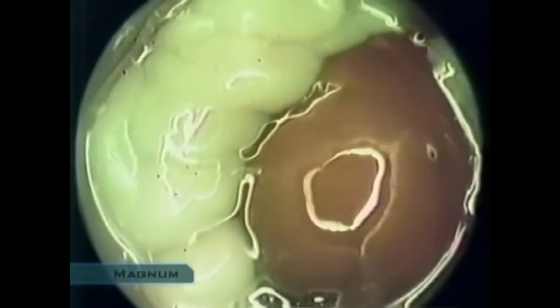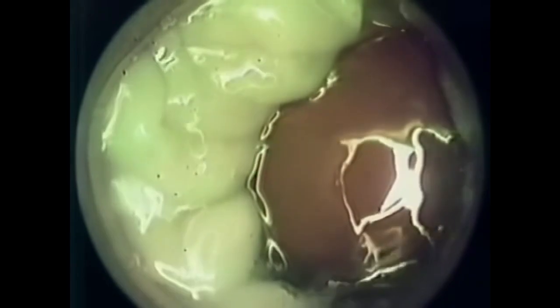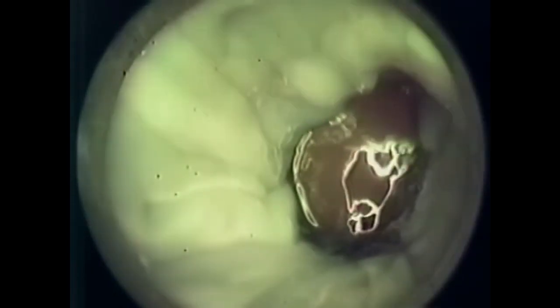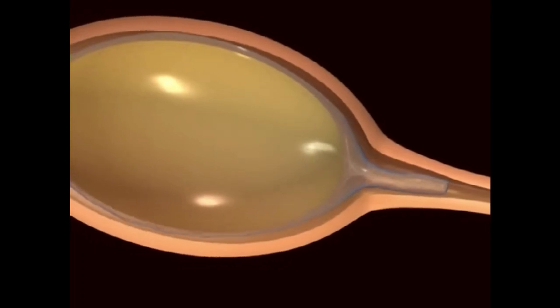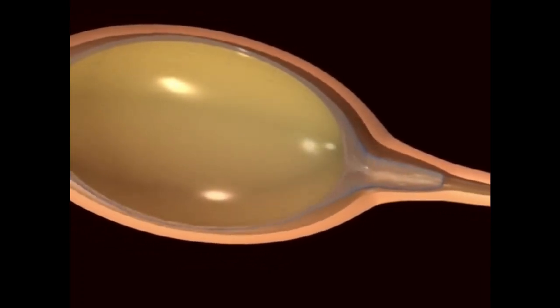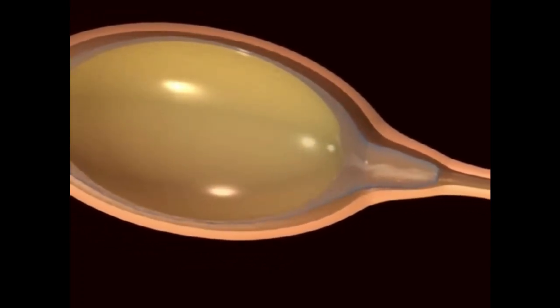The yolk spends about 15 minutes in the infundibulum before it passes into the magnum. In the magnum, over a period of about three hours, it will be covered by a dense, shock-absorbing layer of albumin, or egg white.